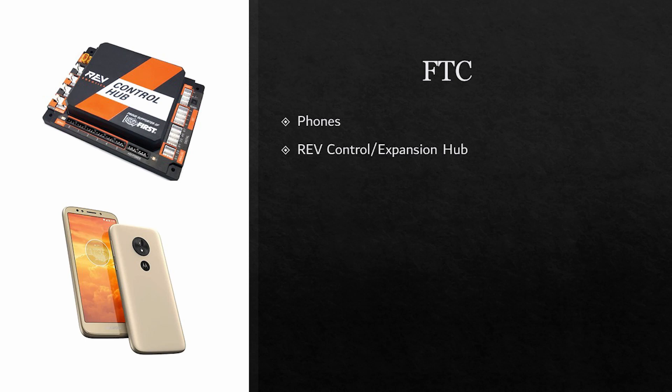The control and expansion hubs are very similar. They combine the power distribution, control module, and motor controllers all into one device. What makes the electrical system in FTC truly unique is their use of phones. In FTC, phones are used as a substitute for the radio, allowing the robot drivers to communicate with the robot on the field.